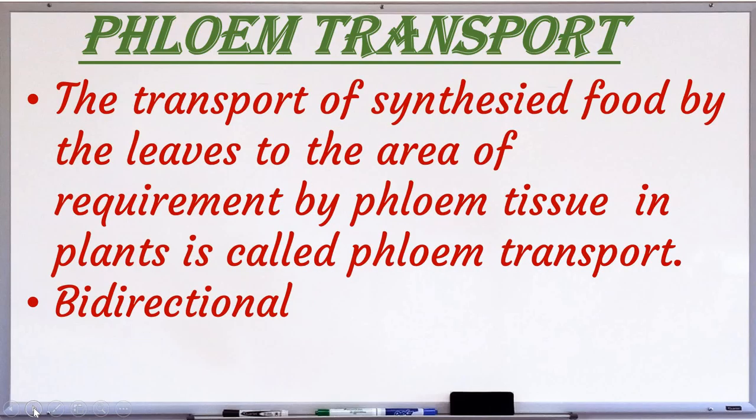This is phloem transport. Sometimes when the leaves shed, the sugar stored in the roots mobilizes the organic material towards the growing buds. Thus the direction of the source and the sink is reversed. It is bi-directional, whereas in xylem it is unidirectional.